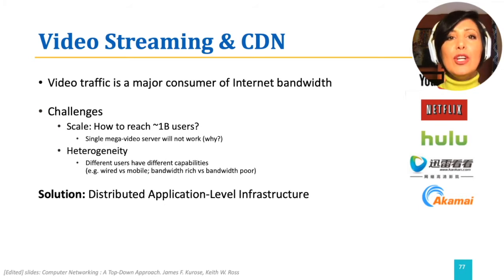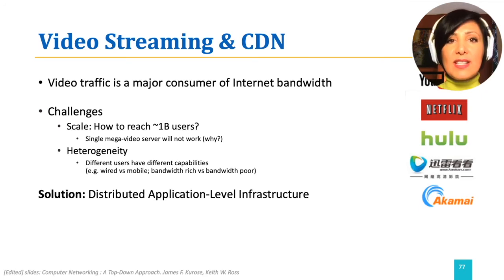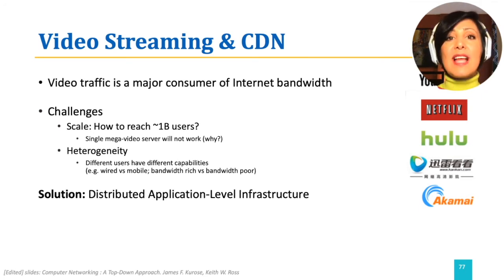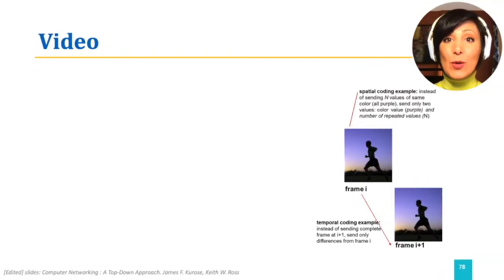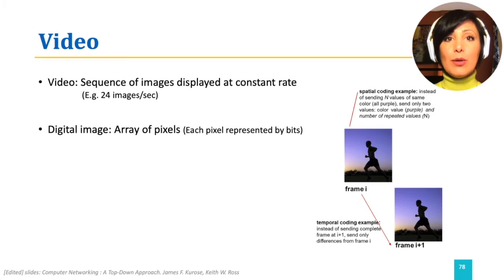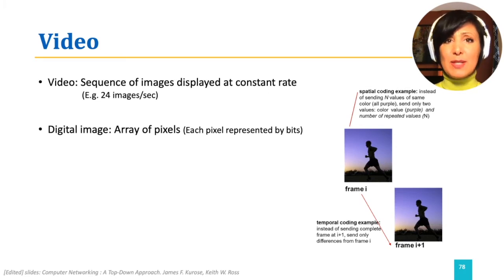However, to understand the solution, we first need to understand the video traffic itself — to understand the requirements of the application — and then approach this application-level infrastructure. Video is a sequence of images displayed to the user at a certain rate, for example, 24 images per second or 30 images per second.